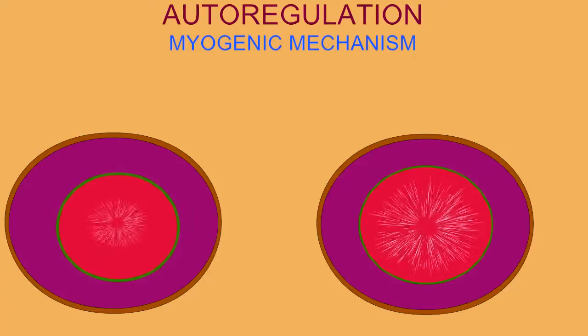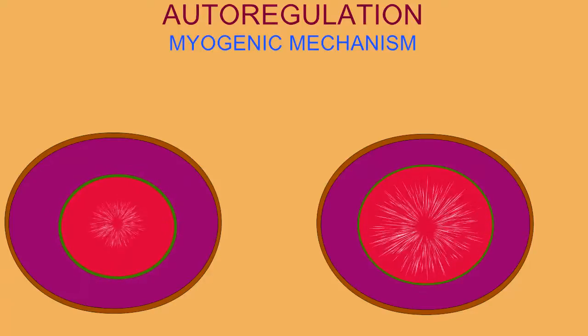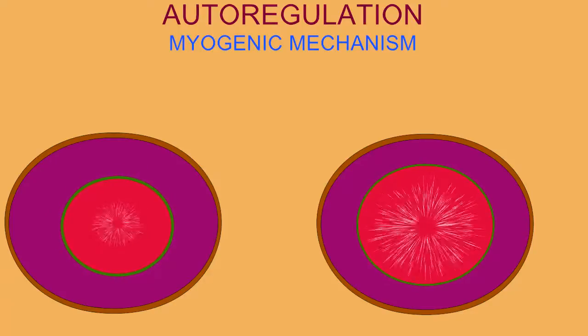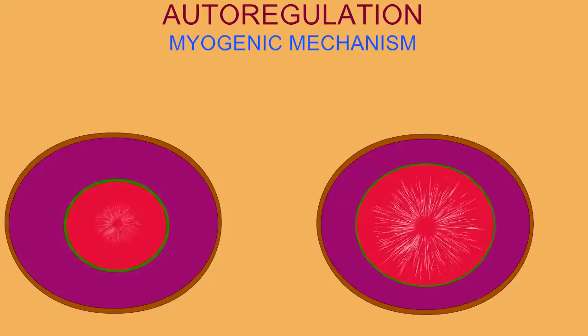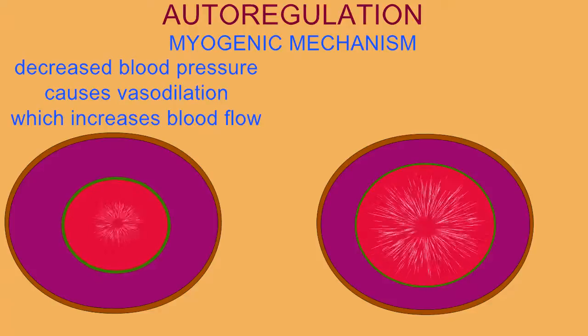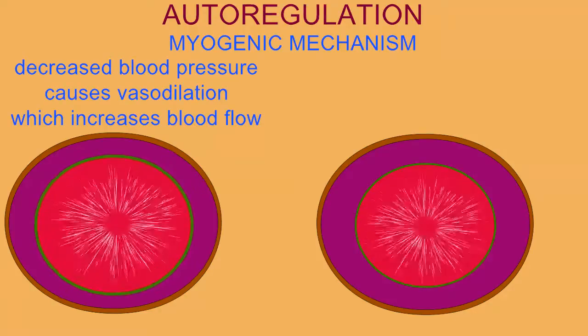For example, there is a myogenic mechanism in which the smooth muscle will respond to pressure in the blood vessel, where if the pressure is low it will dilate, allowing more blood to flow,